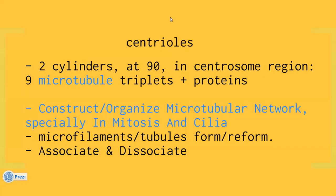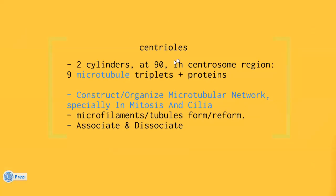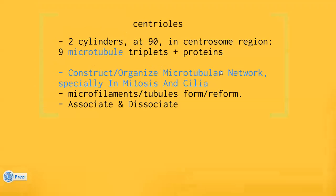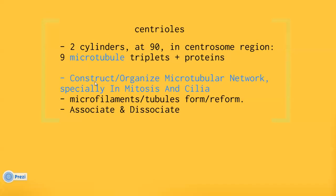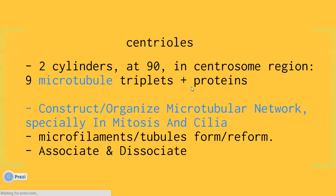The last organelle: centrioles are two cylinders oriented at 90 degrees to each other. They consist of nine microtubule triplets plus proteins. Their functions include contracting and organizing the microtubule network, especially in mitosis and cilia.